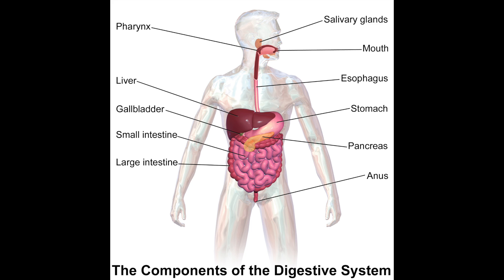One of the main things organ systems do is work together to digest and absorb food in the digestive system. The digestive system is a muscular tube which includes glands — the pancreas and the salivary glands — which produce digestive juices. The liver produces bile, and the small intestine is where absorption of soluble food occurs.